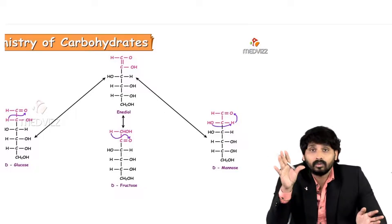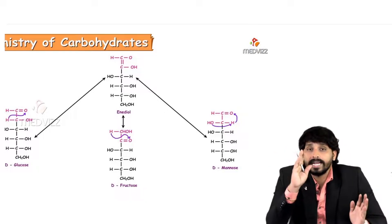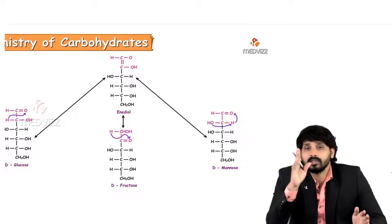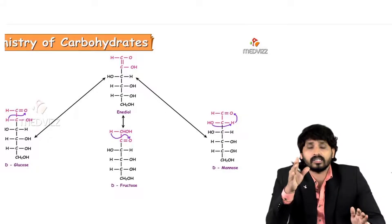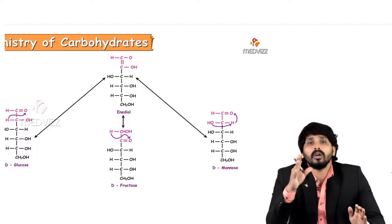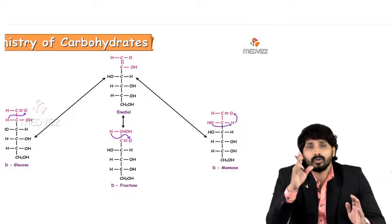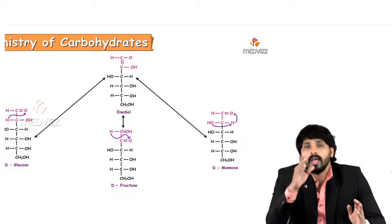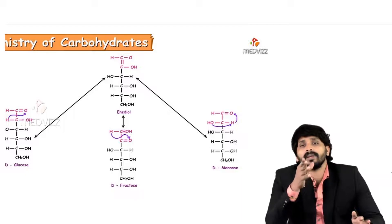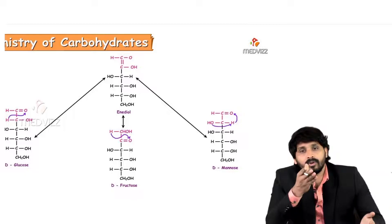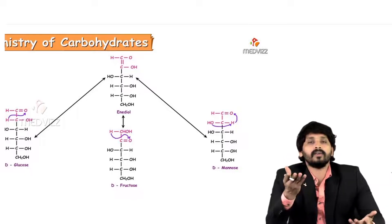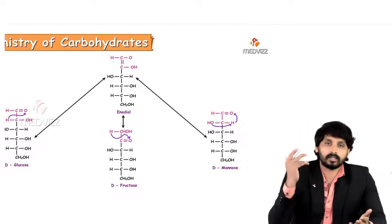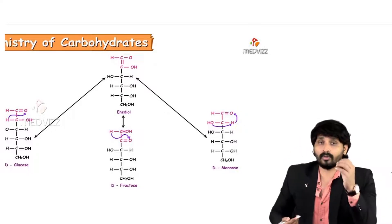The interconversion does not happen directly — it goes through an intermediate called enediol. Enediol is a strong reducing substance that gives a positive Benedict's test. All monosaccharides — glucose, fructose, mannose, galactose — are reducing in nature and definitively give a positive Benedict's test, which is based on the formation of this enediol intermediate.